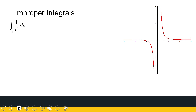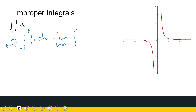So I need to anticipate what happens where x is equal to 0, and we saw in the previous video how to treat that. So we're going to look at the limit as t approaches 0 from the negative side of the integral from minus 1 to t of 1 over x cubed dx, plus the limit as b approaches 0 from the positive side of the integral from b to 2 of 1 over x cubed dx.